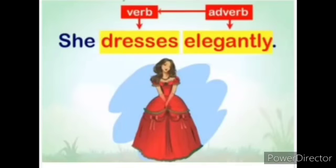But consider: 'She dresses elegantly.' Here, 'dresses' is a verb — an action. 'Elegant' comes under adjective, but when we add '-ly' to the adjective, it turns into an adverb. We have changed 'elegant' into 'elegantly.' For some words, if we add '-ly,' it will turn into an adverb.